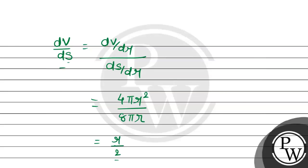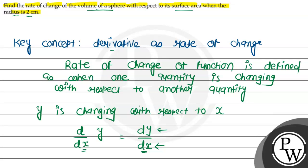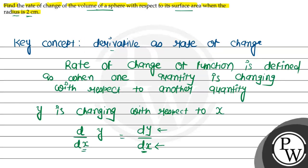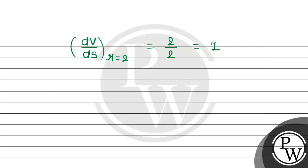Now we need to find dV/dS at radius equal to 2 centimeters. Substituting r = 2: dV/dS = 2/2 = 1. The unit is centimeter. So the answer is 1 centimeter. This is the solution of the question.